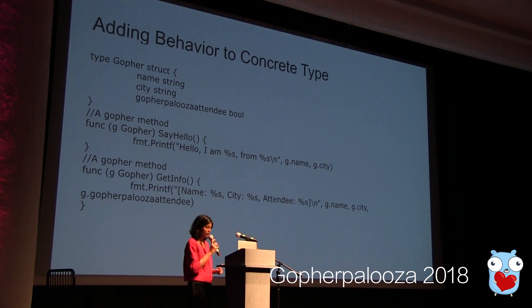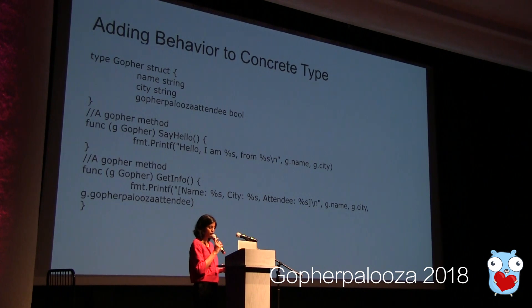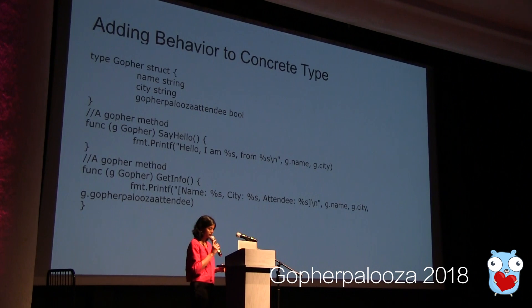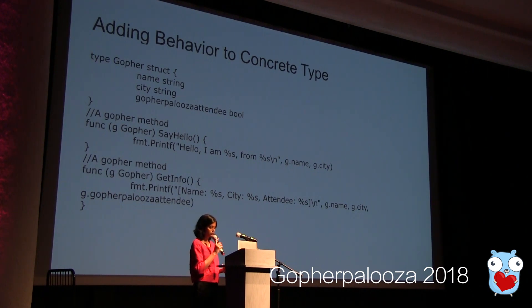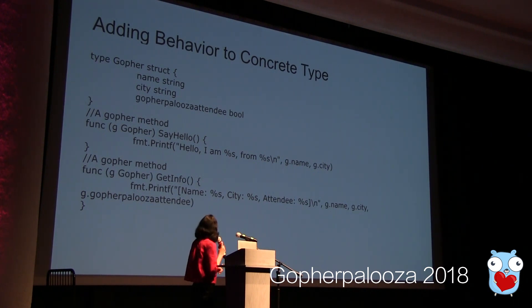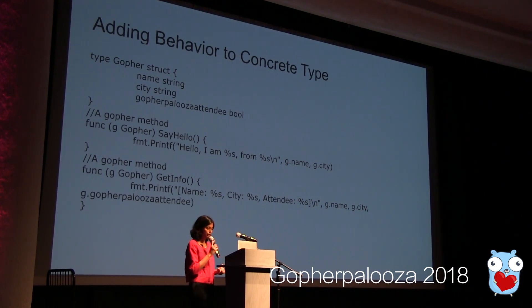We're going to add behavior to a concrete type. We've defined an interface for implementing gopher, and now we implement these behaviors. In most object-oriented languages, methods are associated with a class, but in Go, methods are associated with a struct type. Here we've added a couple of behaviors to our gopher type.